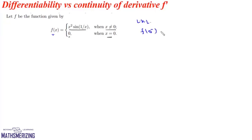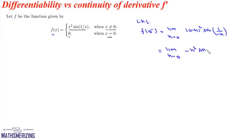First we will check continuity of f(x). The left-hand limit f(0⁻) is limit as h→0 of (0−h)²·sin(1/(−h)), which equals limit h→0 of −h²·sin(1/h). The form is 0·sin(∞). Since sin(∞) oscillates between −1 and +1 and 0 times any finite value is 0, the left-hand limit is 0.